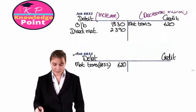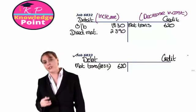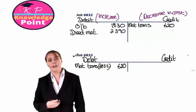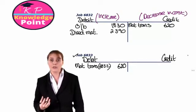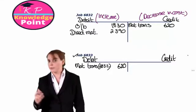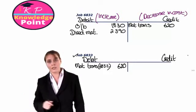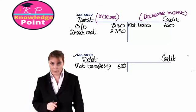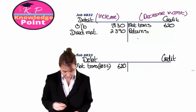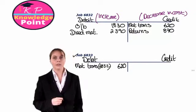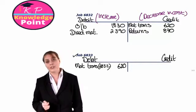Continuing with job 6832, the next item is that £870 worth of material was returned to the stores department. If we return material to stores, it means it was surplus to requirements and was not used on this job. That decreases the costs associated with this job, so we'll record the return as a credit of £870. That's all of our entries for job 6832 in relation to materials.